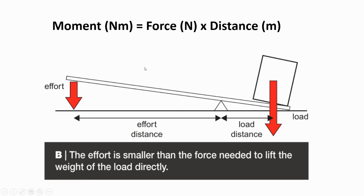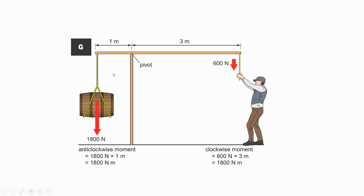We can also use the idea of turning forces or moments to work out whether scenarios will be balanced. In this scenario, we have a heavy barrel suspended from a beam. Without the downward force from the person on the right, the barrel would come crashing down.